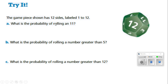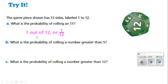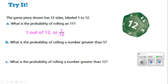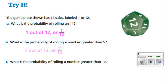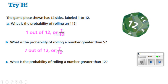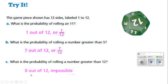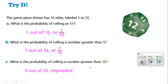Now let's try with a 12-sided die. What is the probability of rolling an 11? Since 11 is only one of twelve numbers, that's a one out of twelve chance. What is the probability of rolling a number greater than five? The numbers greater than five are six, seven, eight, nine, ten, eleven, and twelve — that's seven numbers — so the probability is seven out of twelve. What is the probability of rolling a number greater than twelve? There are no numbers greater than twelve on the die, so it is impossible. The probability is zero out of twelve.